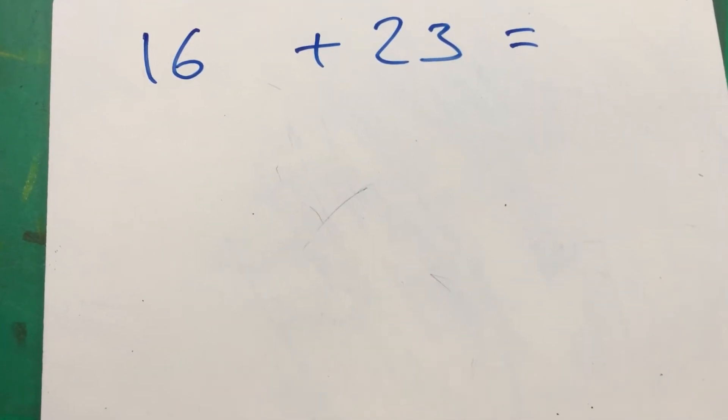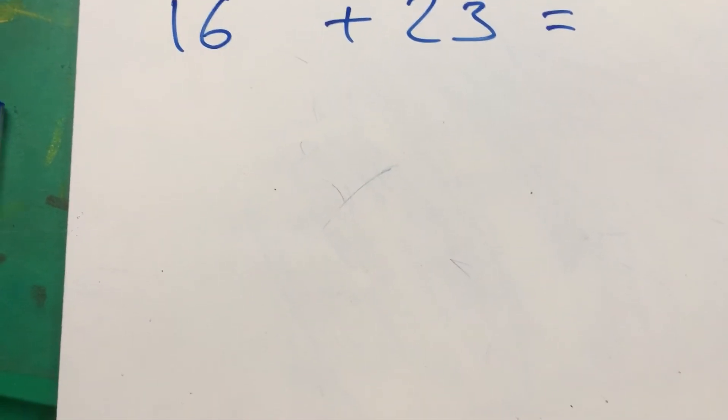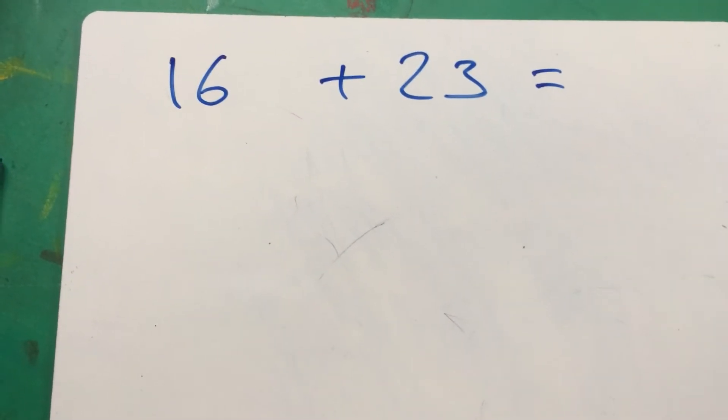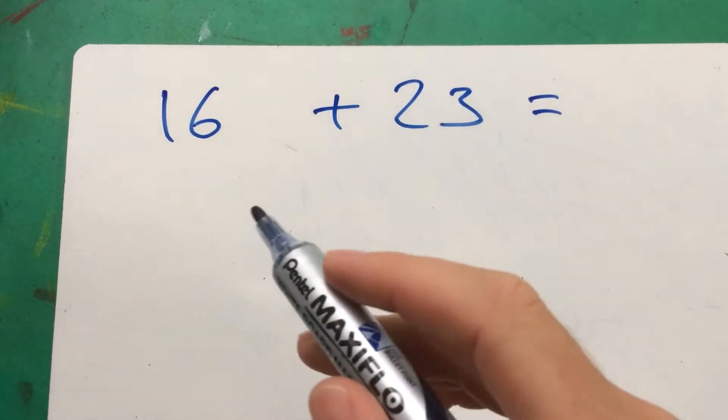Hello and welcome back to Martin Maths. This is Year 2 Horizontal Addition Method 2. And this time we're going to look at adding 16 plus 23.